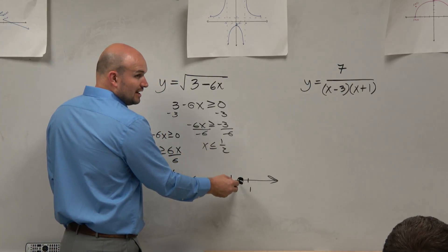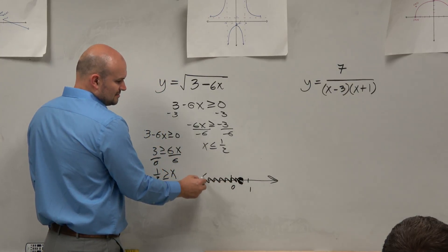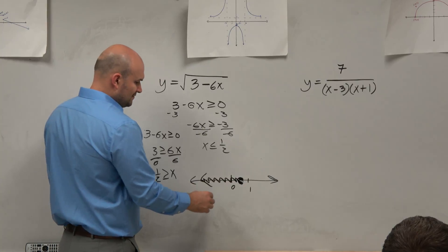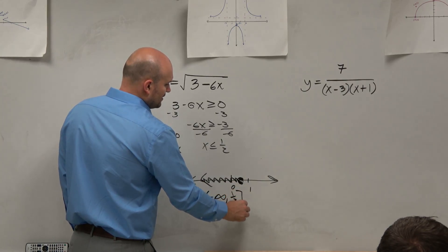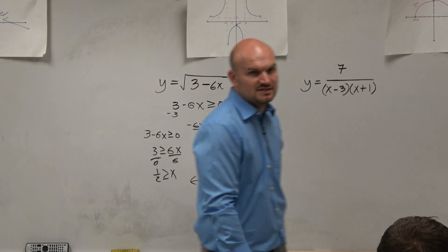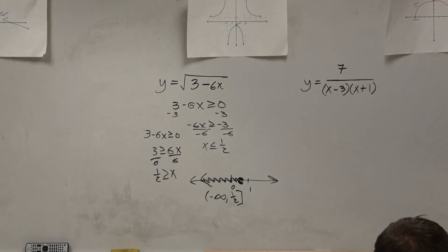It's equal to, and it's all values that are less than. So can I draw an inequality from this graph? Sure. Negative infinity to 1 half. And I'll use brackets because 1 half is contained, right? It's a part of the domain. Cool? Yep. You got it? Yep.